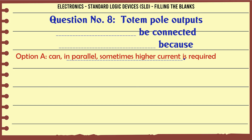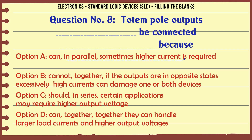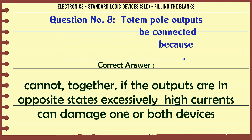Totem pole outputs cannot be connected together because if the outputs are in opposite states, excessively high currents can damage one or both devices. The correct answer is: cannot be connected together — if the outputs are in opposite states, excessively high currents can damage one or both devices.